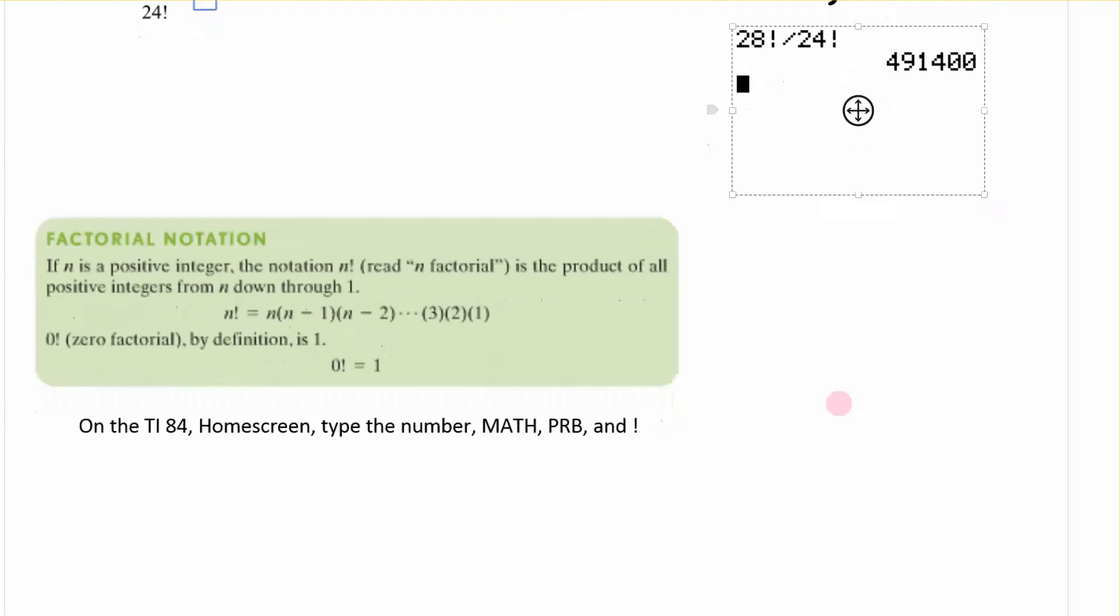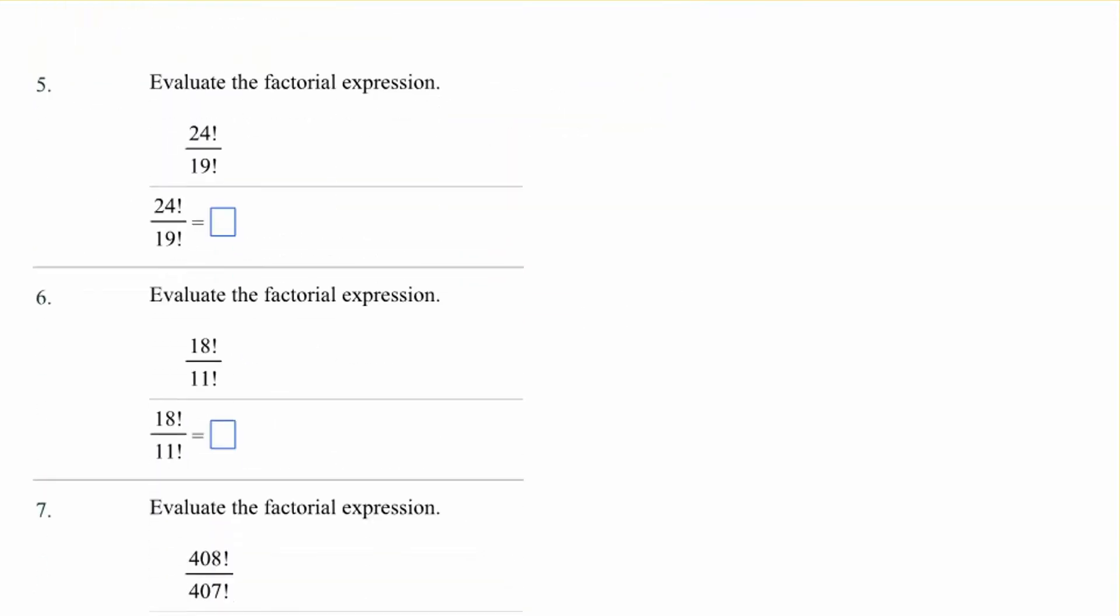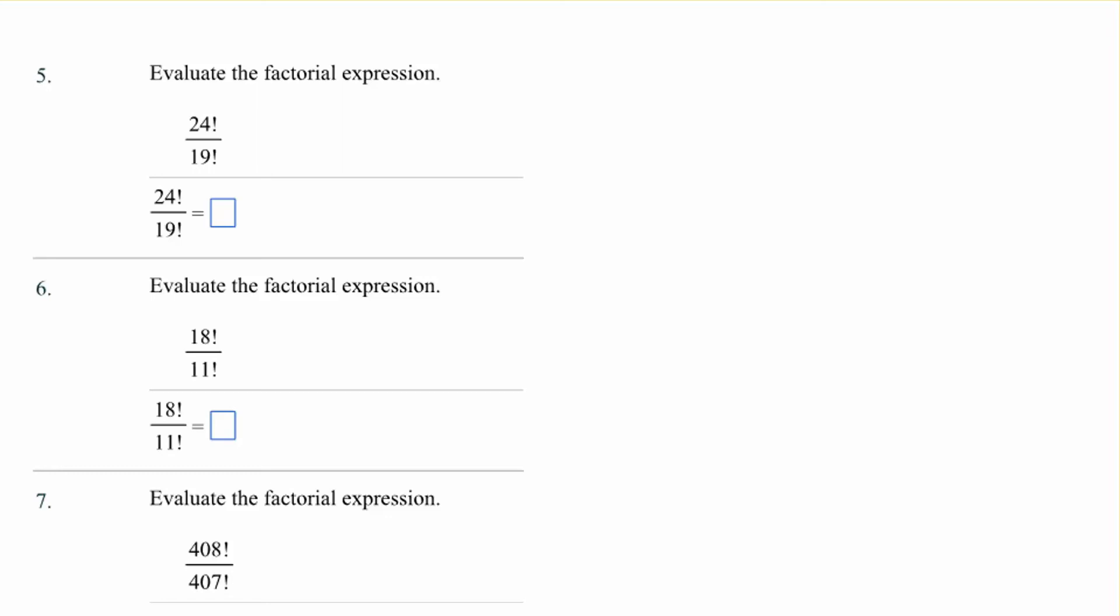You might want to make a notation of this on the TI-84. Go to the home screen. Type in the number. Hit math. Go to PRB for probability. And then to the exclamation point. So, that's what I did several times. But you may want to write that down. All right. Now let's do some factorial problems.